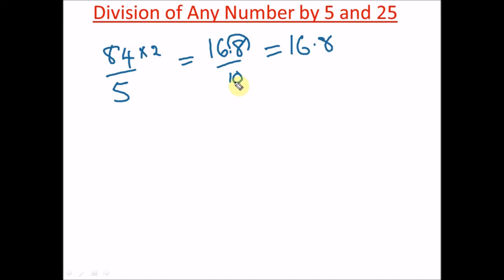How do we get this 10? Since we multiplied 84 by 2, we're also going to multiply 5 by 2. This is how you divide within three seconds; this is the trick.